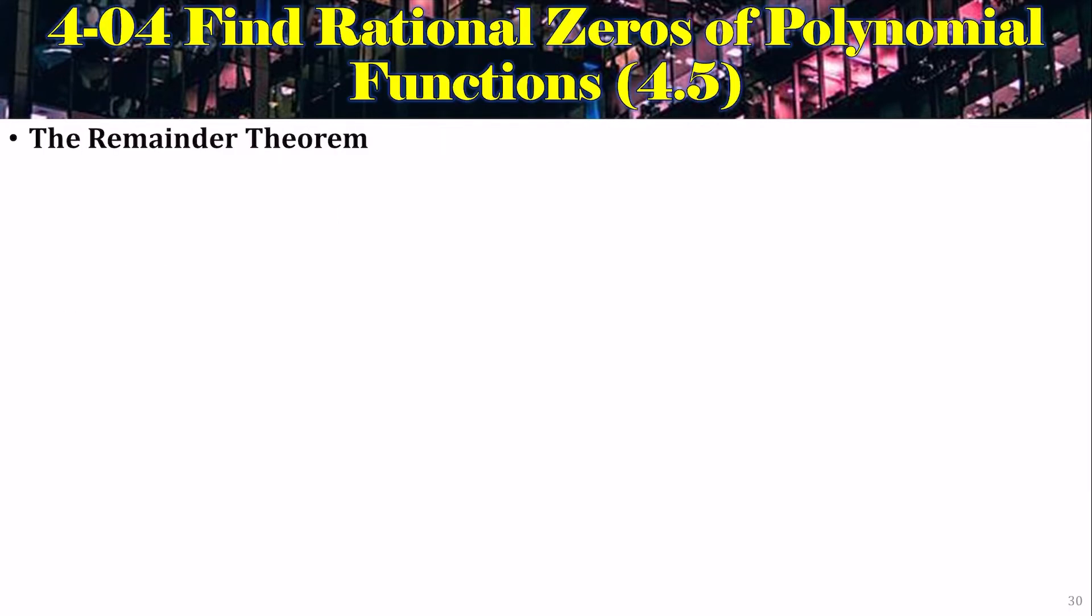Alright, we have a theorem. Today we get the remainder theorem, which says if a polynomial is divided by x minus k, then the remainder is the value f of k.